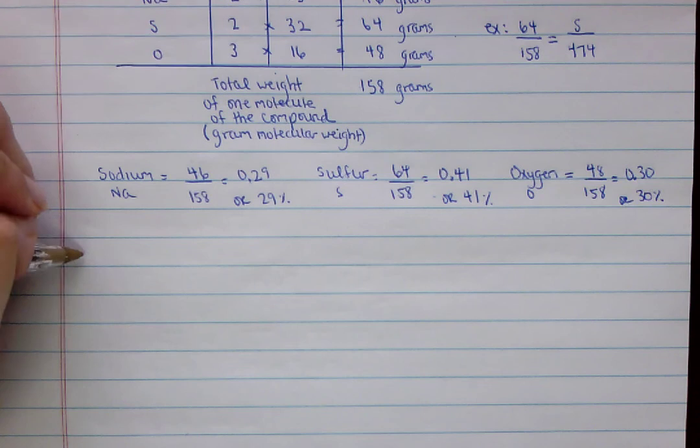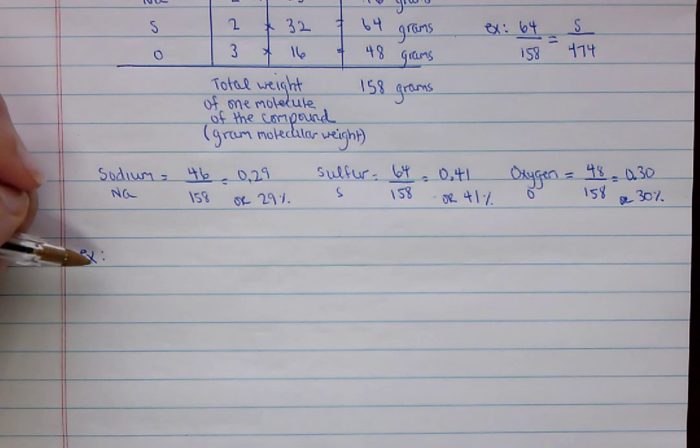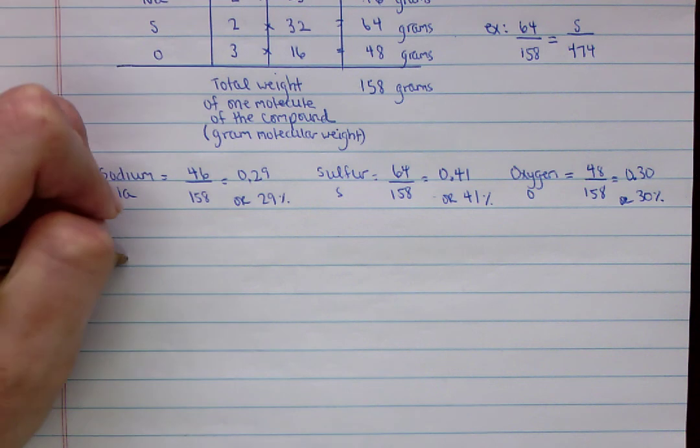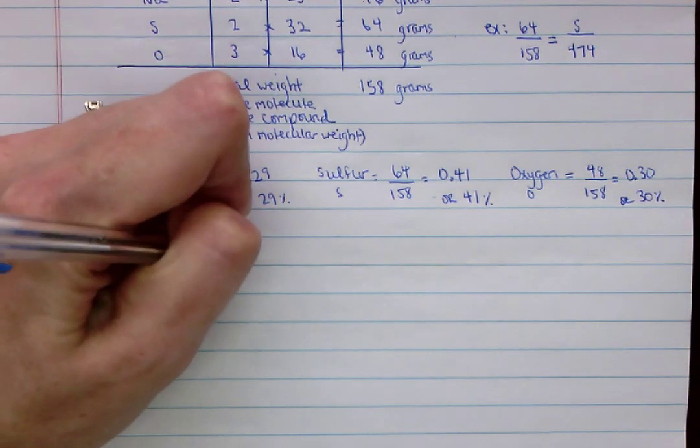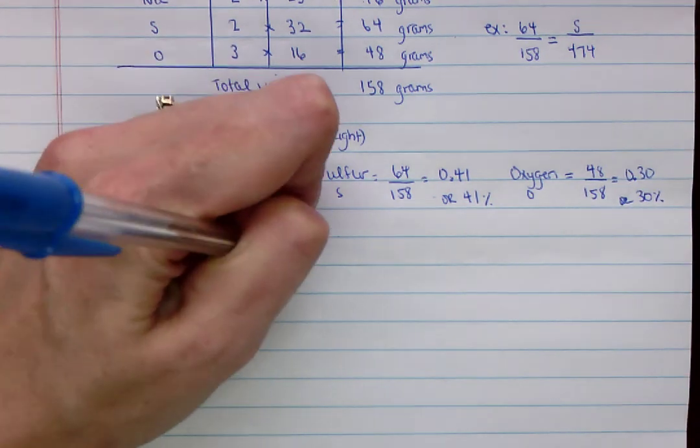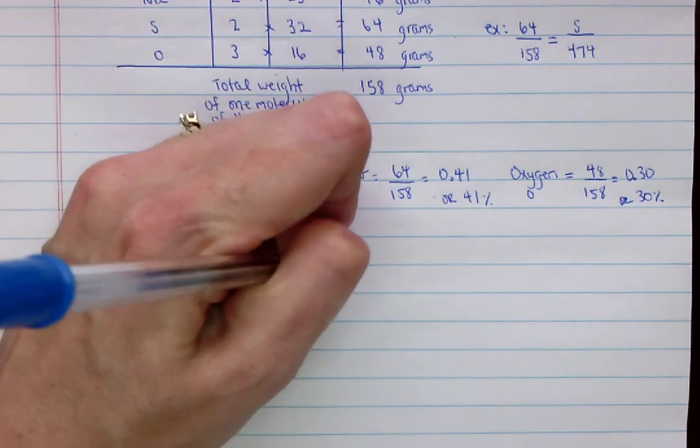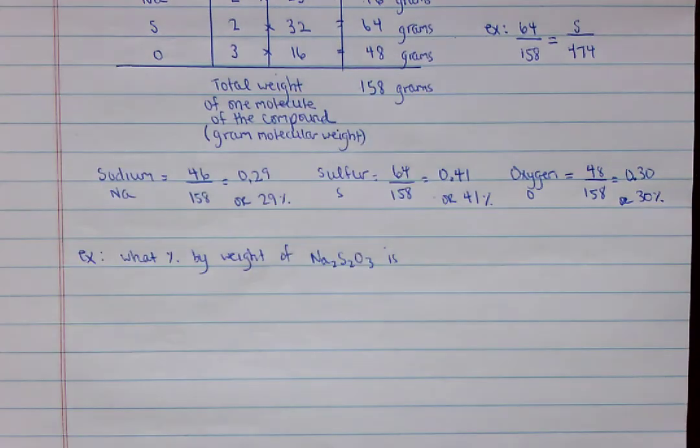So I'll just do one more example, and then that's it. So in your book, this is example five, but it says what percent by weight of this compound Na2S2O3 is, and then it asks for sodium.